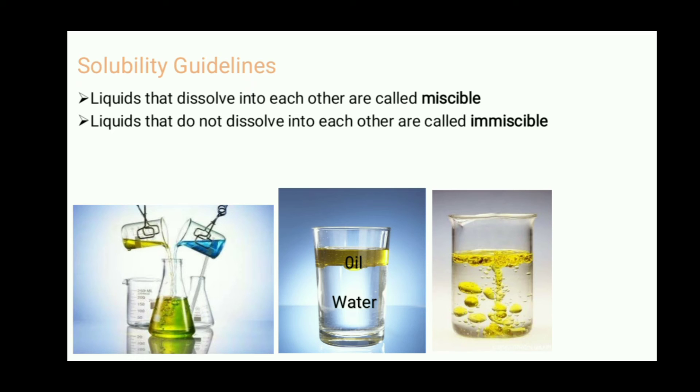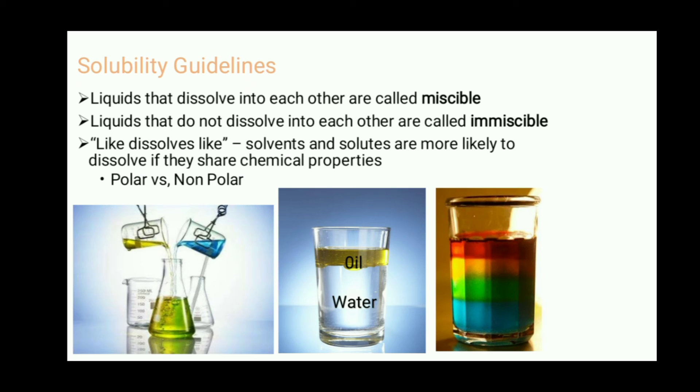If you wait long enough you can sometimes see different layers form. If you're super creative and have a lot of time, you can get some different soluble dyes and get a really cool rainbow mixture of least dense to highest density, but of course they don't want to mix with each other. The general idea is like dissolves like. Solvents and solutes are more likely to dissolve if they share chemical properties. A polar compound and a polar solvent are more likely to dissolve. If you have a non-polar compound and a non-polar solvent, they are likely to dissolve.